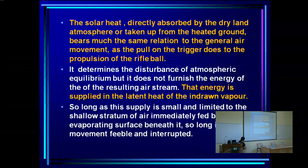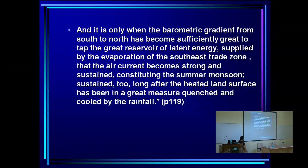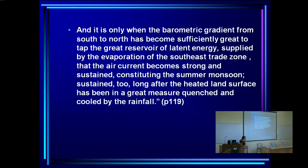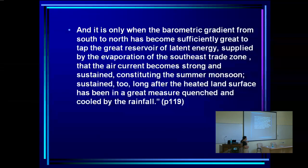Blanford continues: so long as this moisture supply is small and limited to a shallow stratum of air immediately fed by the evaporating surface, the air movement is feeble and interrupted — this is the spring situation. It is only when the pressure gradient from south to north has become sufficiently great to tap the great reservoir of latent energy supplied by the evaporation of the southeast trade zone that the air current becomes strong and sustained, constituting the summer monsoon — sustained long after the land surface has been cooled by the rainfall.